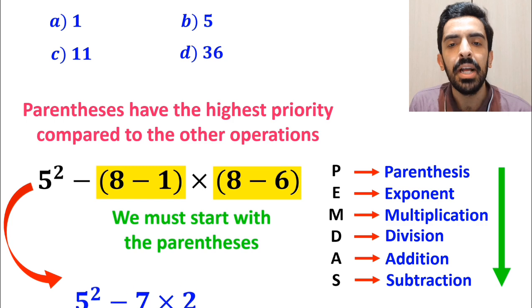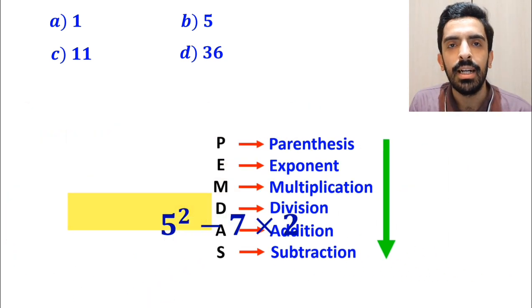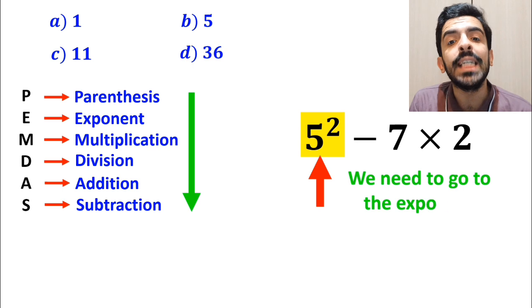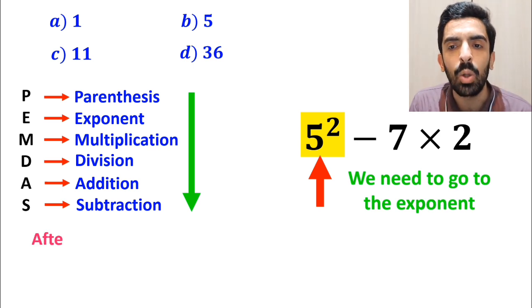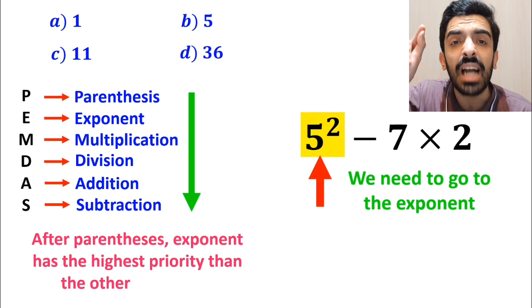Okay, instead of this expression, we can write 5 squared minus 7 multiplied by 2. And the next step, we need to go to the exponent, because in the PEMDOTS rule, after parenthesis, exponent has the highest priority than the other operations.